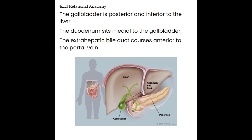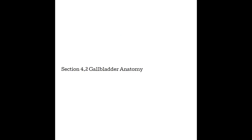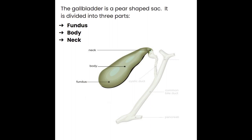As far as relational anatomy goes, the gallbladder is posterior and inferior to the liver. The duodenum sits medial to the gallbladder and the extrahepatic bile duct courses anterior to the portal vein. Section 4.2, gallbladder anatomy. The gallbladder is a pear-shaped sac divided into three parts: the fundus or top of the gallbladder, the body, and the neck.